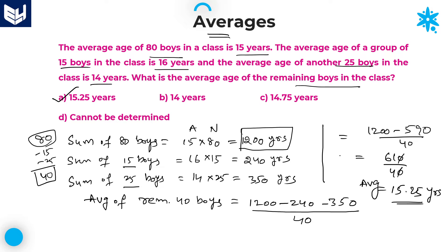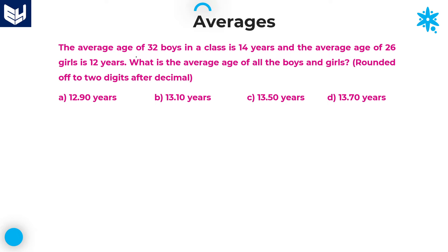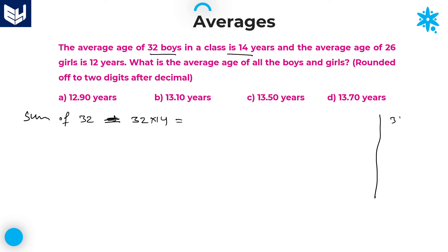Option A is the right answer for this question. Let's move on to the next question. The average age of 32 boys in a class is 14 years. Therefore, sum of 32 members = 32 × 14. Calculating: 32 × 14 = 448.